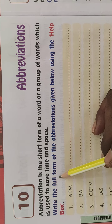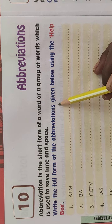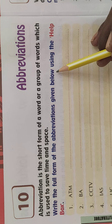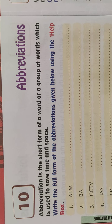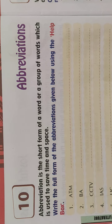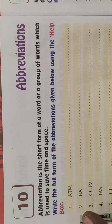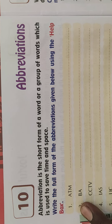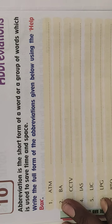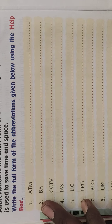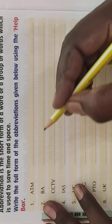Write the full form of the abbreviation given below using the help box. The help box is used to write the full form of the abbreviation. This is the short form of a word which is used to save time and space.